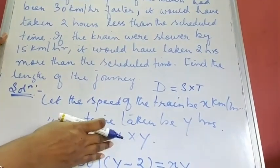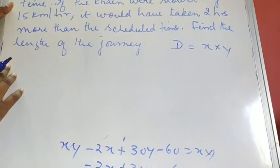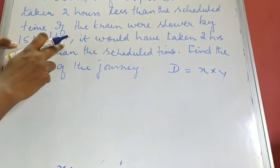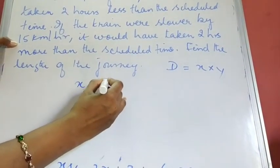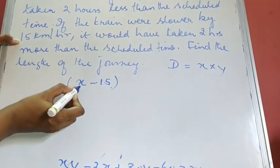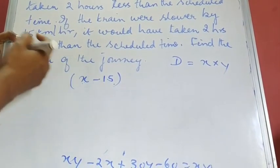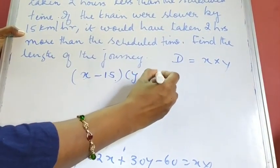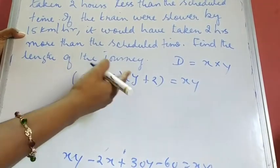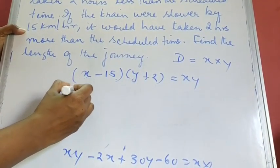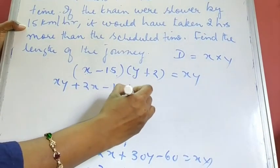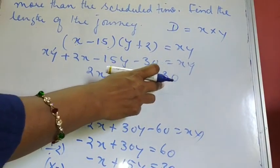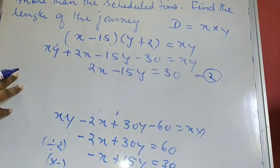For the second condition, if the train is slower by 15 km/h, speed becomes x − 15 and time becomes y + 2. Expanding (x − 15)(y + 2) = xy gives 2x − 15y = 30, which is our second equation.